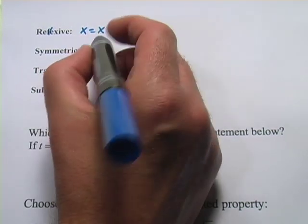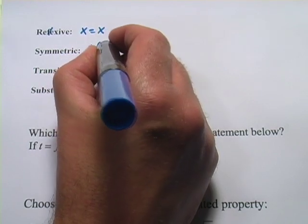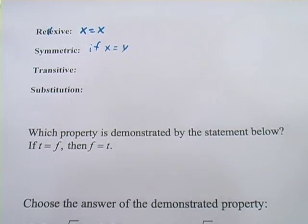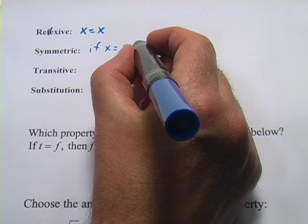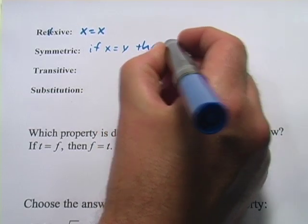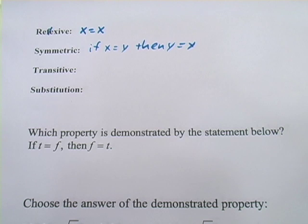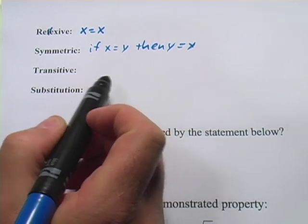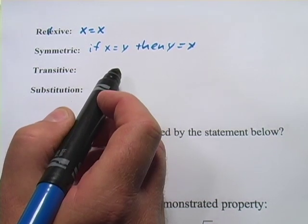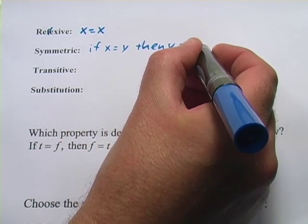The symmetric property says if x equals y, well then the opposite is true too, then y equals x. Also might seem pretty obvious to you, but it's kind of important to have these basic building blocks down.